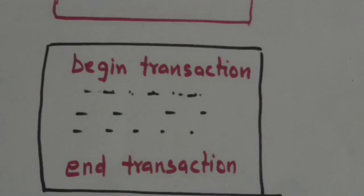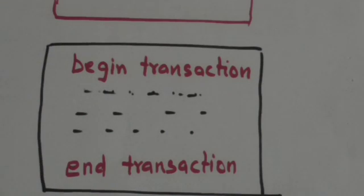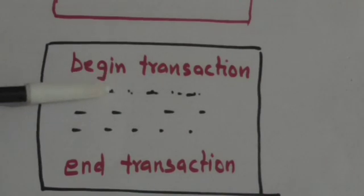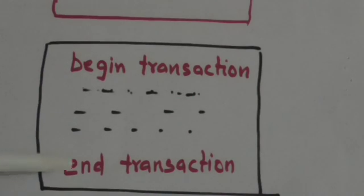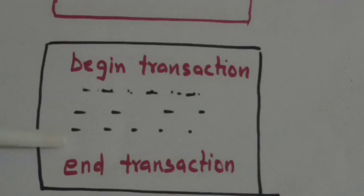In an application program, a transaction is specified by 'begin transaction' and 'end transaction' statements. All database access operations between these two statements form one transaction.